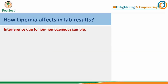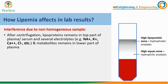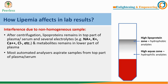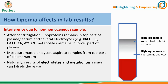Thirdly, if the sample is lipemic, serum and plasma become non-homogeneous. In that case, the lipoprotein part rises to the top of the serum and plasma, while electrolytes like sodium, potassium, calcium, and chloride, along with some metabolic analytes, settle in the lower part. Since automated analyzer probes aspirate serum and plasma from the top, the results of electrolytes and some metabolite assays can falsely decrease.